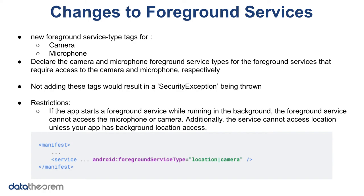Regarding foreground services, apps targeting the new API version get two new foreground service type tags for the camera and the microphone. Not adding these tags would result in the Android OS throwing a security exception. If an app starts a foreground service while running in the background, that service cannot access the microphone or camera. The service also cannot access location unless the app has background location access.